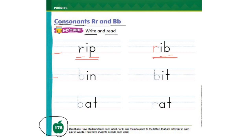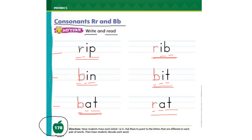Now here you need to trace the letter B and read the word. Can you read it for me? B - i - n - bin. How about this word? B - i - t - bit. Can you read this word for me? B - at - bat. And the last word: R - at - rat. Well done everybody. Do you know any other words that begin with R or B? You can write them and send me your lists.